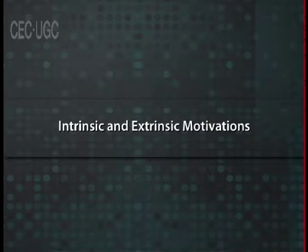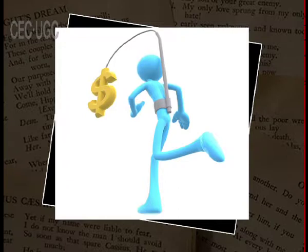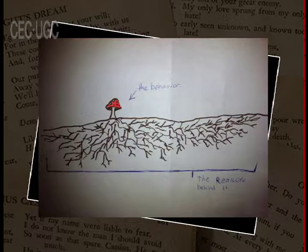Intrinsic and extrinsic motivations: Intrinsic motivation is a motivation to engage in an act for its own sake. It refers to a force within the individual and works from within. An extrinsic motivation is based on the rewards and punishments the act may bring. For example, if you eat because you are hungry, you are following an intrinsic motivation. If you eat something you do not like in order to please the cook, you are following an extrinsic motivation.